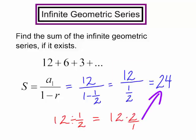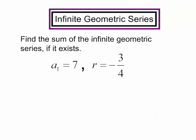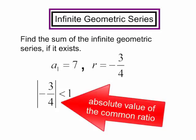Let's try another problem. Find the sum of the infinite geometric series if it exists. They tell me a sub 1 is equal to 7. The common ratio is equal to negative 3 fourths. Now remember, the absolute value of the common ratio needs to be less than 1.